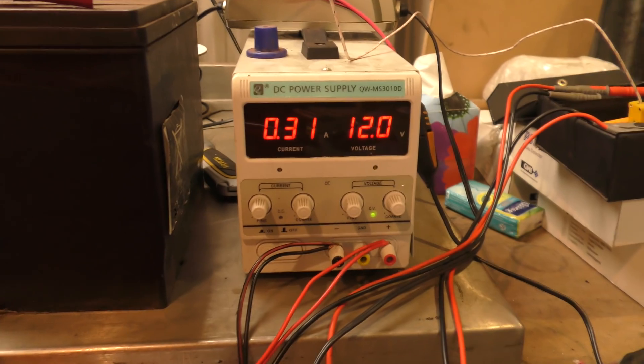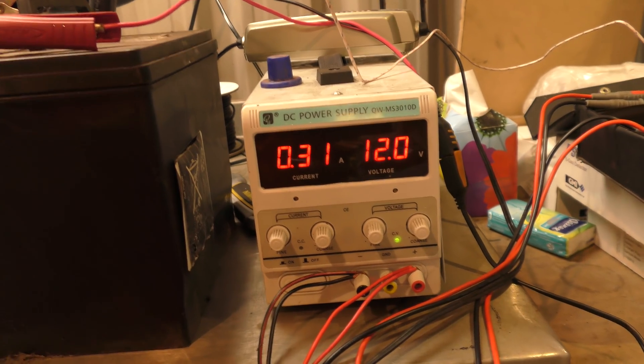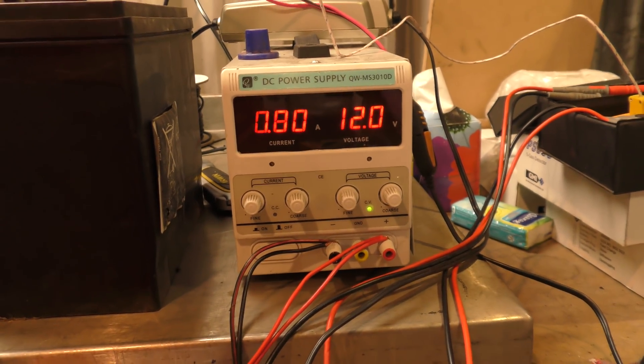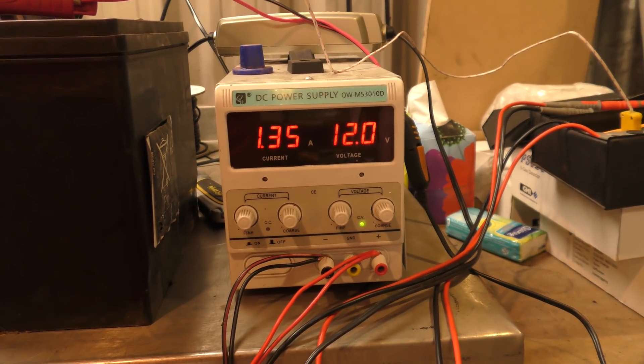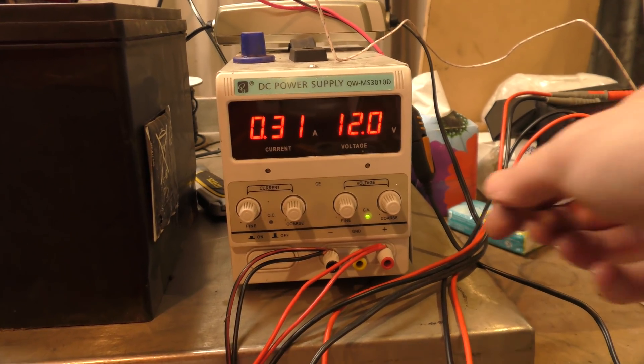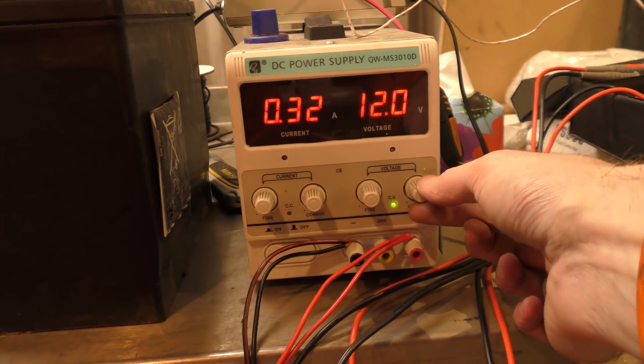The other question was, what happens if the battery voltage goes too low? Does it turn off? The answer is no. It will absolutely drain your battery all the way down. All the way, anything less than six volts, it just stops dead.